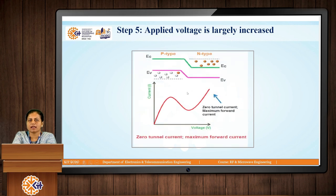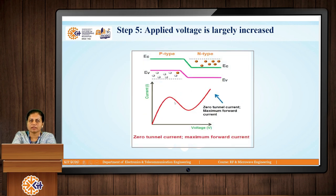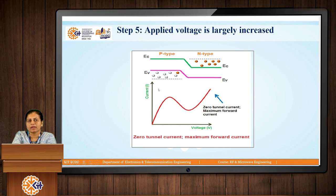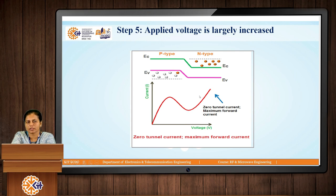When the applied voltage is largely increased, the overlapping between the conduction band of N-type material and valence band of P-type material no longer exists, and the device acts as a normal P-N Junction Diode. Here, tunnel current is zero, but the forward bias current will increase as we continue increasing the applied voltage.